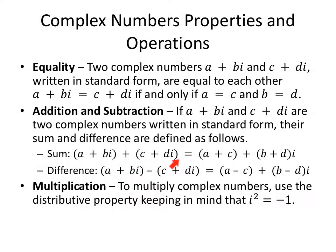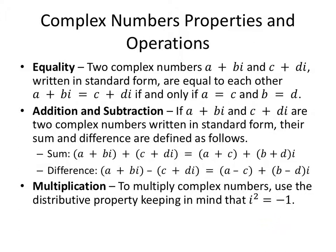If I wanted to add or subtract complex numbers, I would literally combine like terms. A plus Bi plus C plus Di — I combine A and C. Then I combine B plus D because they are both in terms of i. For a difference, I'm just going to distribute my minus sign, so I'll have A minus C plus B minus Di. When it comes to multiplying complex numbers, they're just binomials, so we're going to use FOIL — first, outside, inside, last — telling us how to multiply two binomials. We'll also keep in mind that i squared equals negative 1, so we'll have to replace that sometimes.